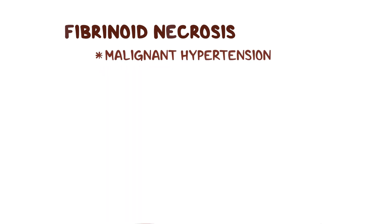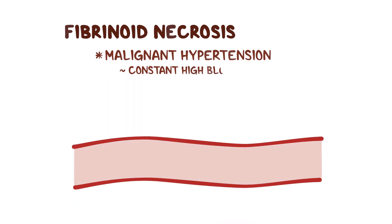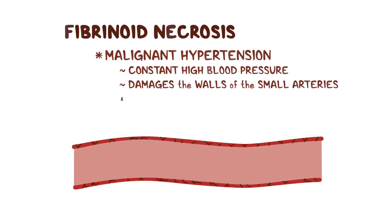Finally, there's fibrinoid necrosis, which is almost always found in malignant hypertension and vasculitis. With hypertension, a constant high blood pressure damages the muscular wall of the small arteries, so fibrin, a protein involved in the clotting of blood, starts to infiltrate and damage the walls of the damaged blood vessels.